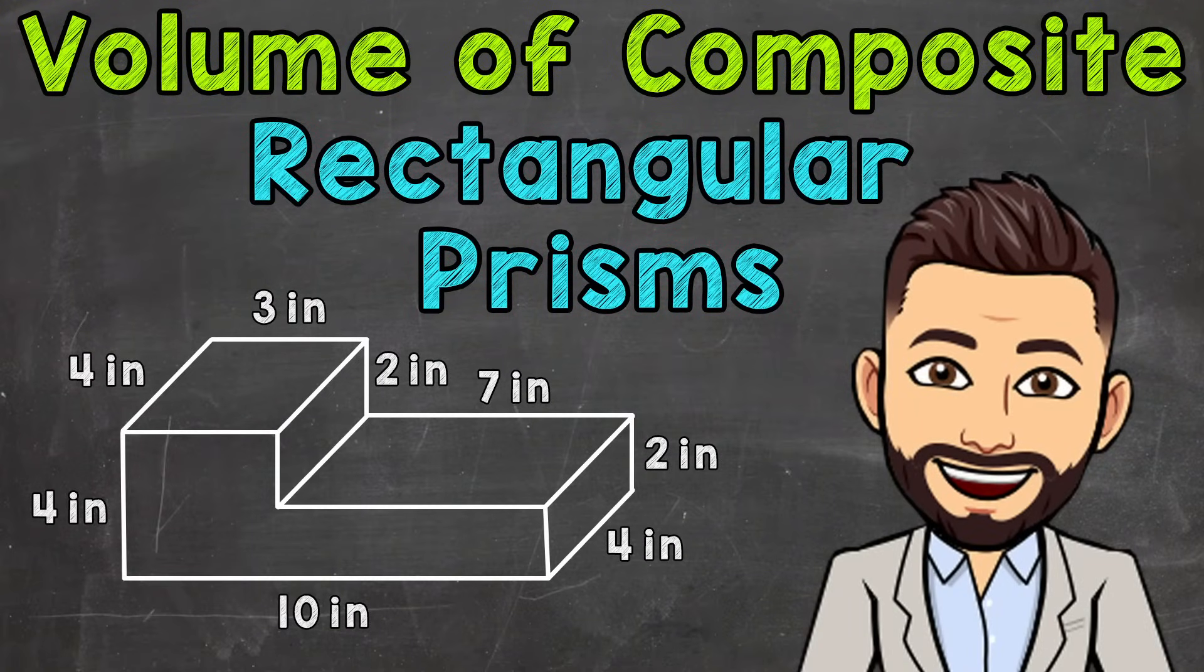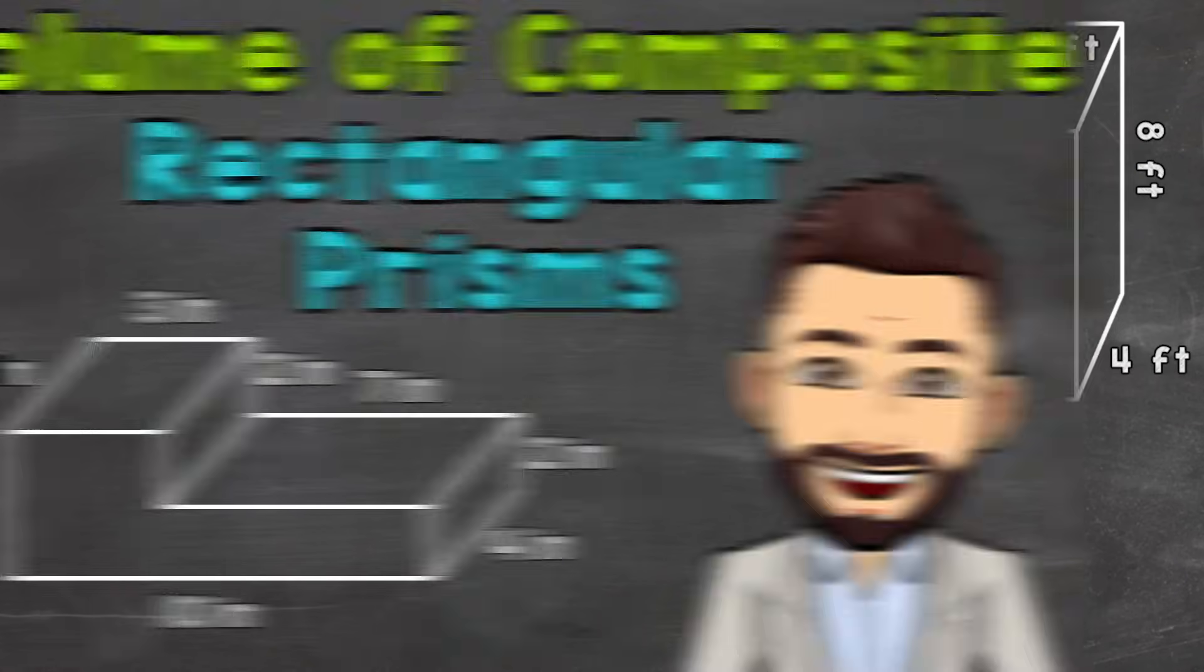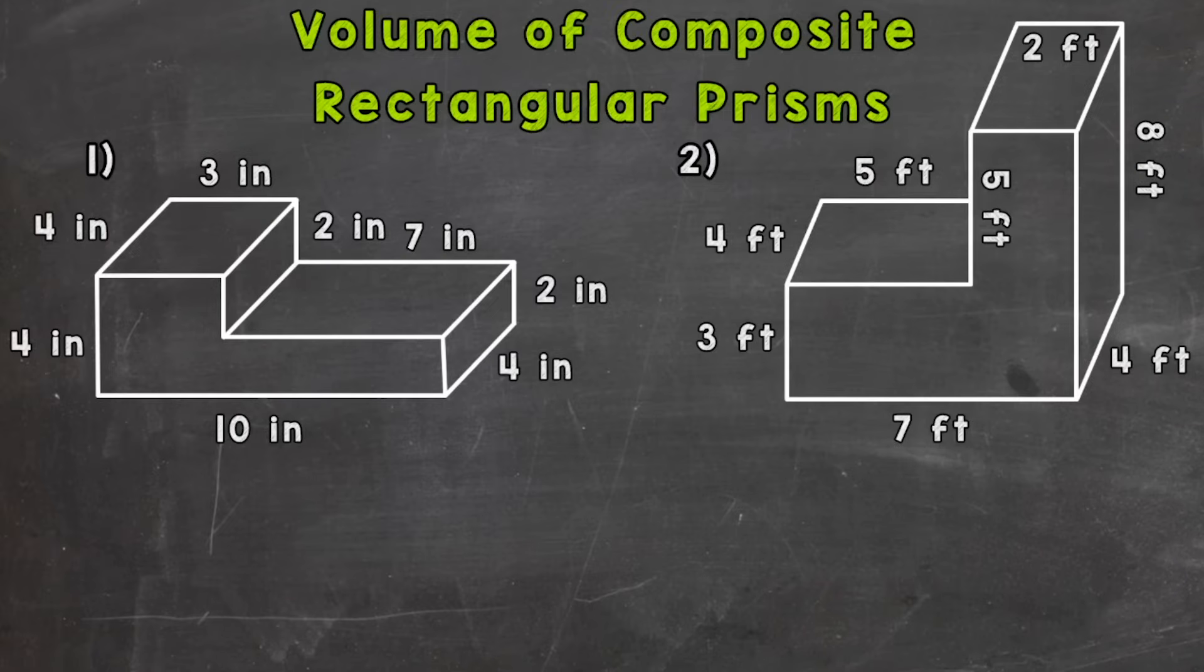Welcome to Math with Mr. J. In this video, I'm going to be covering how to calculate the volume of a composite rectangular prism. And if you take a look at your screen, you'll see two composite rectangular prisms, and we're going to find the volume of both of those in order to help you get this down.